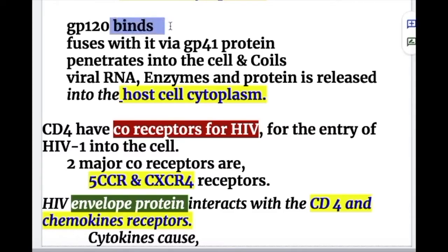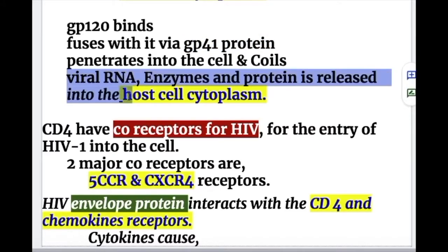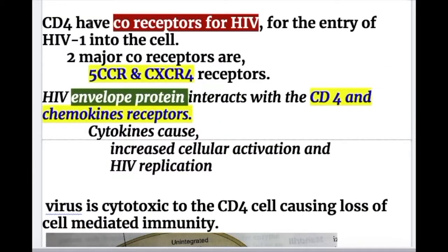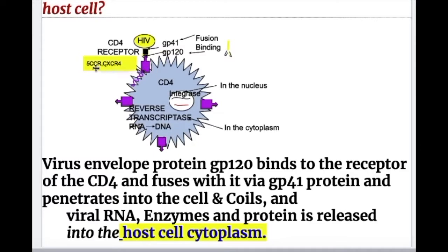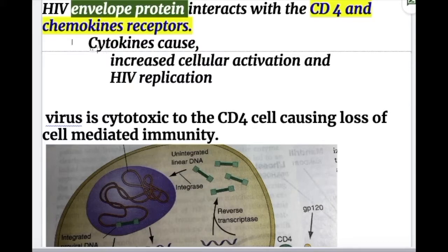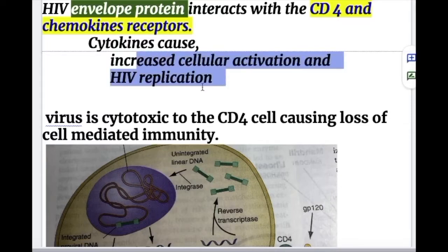GP120 binds to the CD4 cell, then fuses with the help of GP41 protein, penetrates and coils into the CD4 cell, and viral RNA, enzymes, and proteins are released into the host cell. The CD4 cells have two major co-receptors for viral entry: CCR5 and CXCR4 receptors.